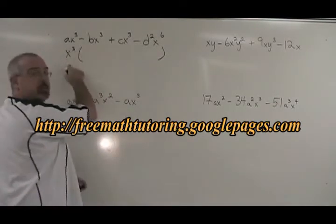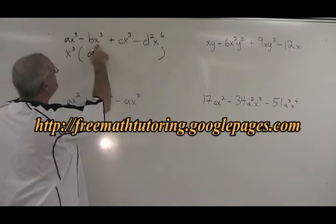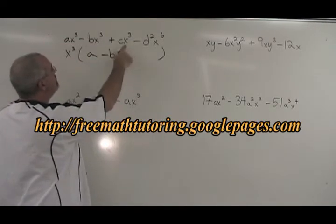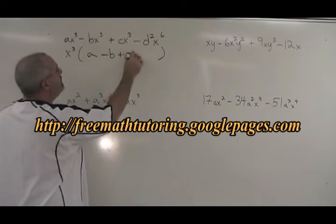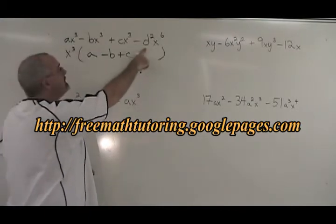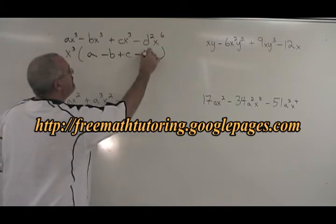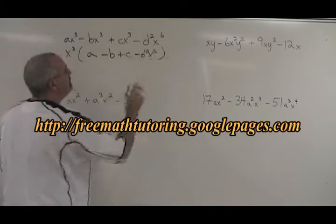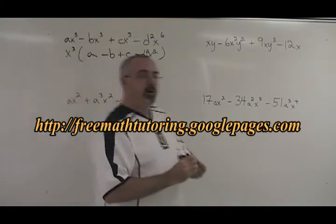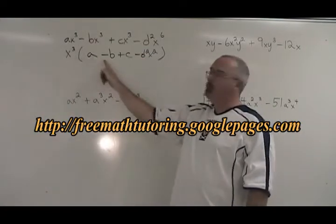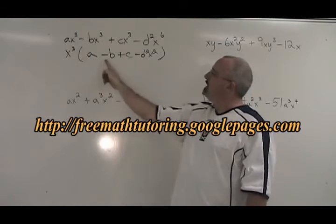A X cubed divided by X cubed is A. Negative B X cubed divided by X cubed is negative B. C X cubed divided by X cubed is C. And negative D squared X to the sixth divided by X cubed is negative D squared X squared. We can verify if we factored correctly simply by multiplying the two factors. If we get the original question, it means we did it right.